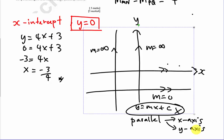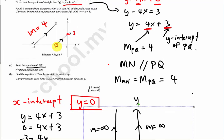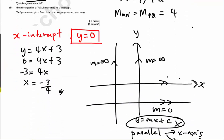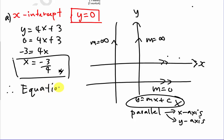Coming back to the question: we found the x-intercept, which is the point where MP crosses the x-axis. That value is negative 3 over 4. Since MP is a vertical line passing through that value, the equation of straight line MP is x equals negative 3 over 4. This is the answer for part (a), worth about two marks.